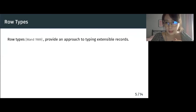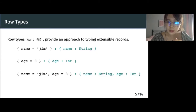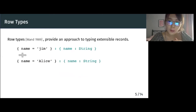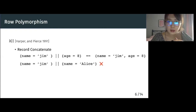With this brief introduction to fi+, now let's move to elaborations from row types. Row types, originally introduced to model inheritance, provide an approach to typing extensible records. For example, if we have a single field record with name equals gene and another field record age equals 8, the record with the two fields can be seen as the concatenation of the previous two records. But what will happen if we concatenate the first record with another one containing also the name field? In this paper, we focus on lambda concat, a calculus proposed by Harper and Pierce that extends system F with row polymorphism.